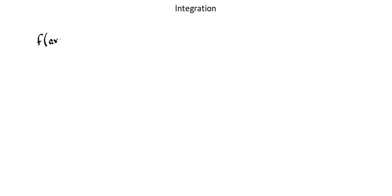Welcome back. We're continuing to look at rules of integration. What we now want to look at is integrating functions in the form f(ax + b). On the IGCSE 0606 additional math exam, you need to be able to differentiate this form of a function. We'll learn four rules for integrating functions in the form f(ax + b). Let's start by looking at differentiation and then working backwards to see how this process works.